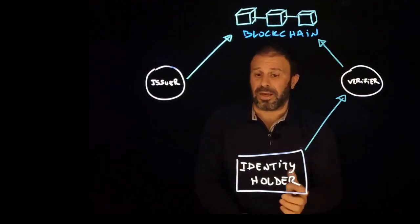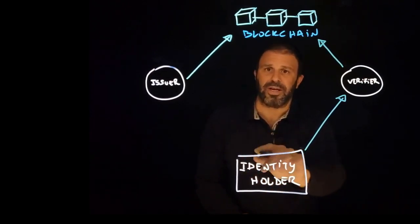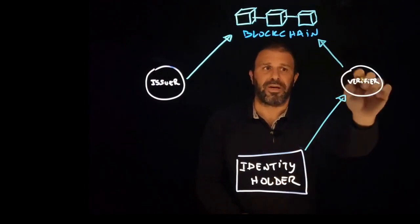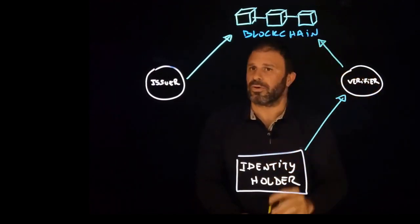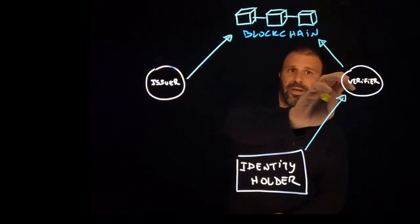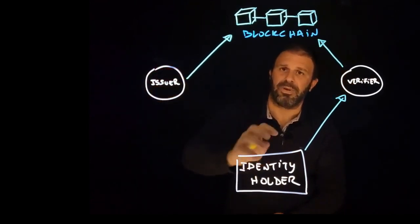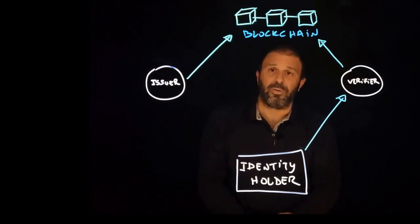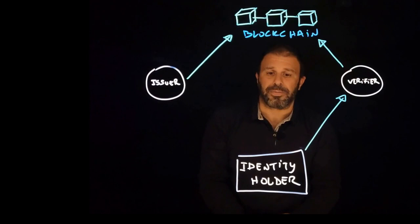In Polygon ID, what we do is that the identity holder, the wallet, creates a zero-knowledge proof of non-revocation and the verifier can check this proof against the blockchain. That way, there is no direct communication between the issuer and the verifier, but credentials can be proved to be valid. That is the most obvious and the most frequent use case of the blockchain, but there are others.